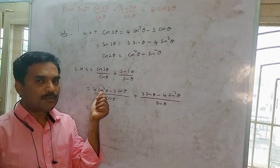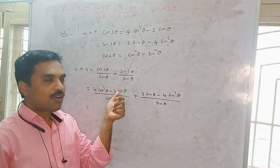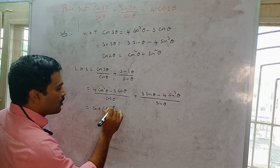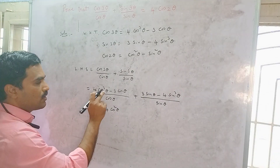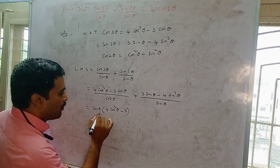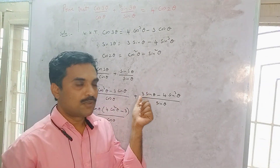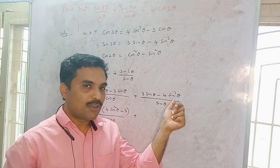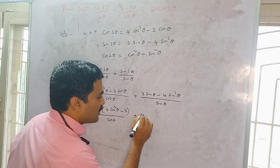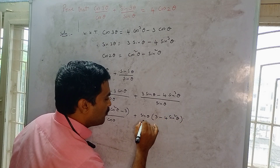In the numerator of the first fraction, cosθ is present in both terms, so we take cosθ as common: cosθ(4cos²θ − 3) / cosθ. Similarly, in the second fraction, sinθ is common in both terms: sinθ(3 − 4sin²θ) / sinθ. We can now cancel cosθ in the first fraction and sinθ in the second fraction.